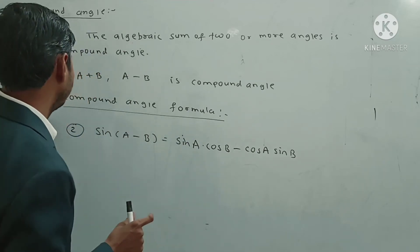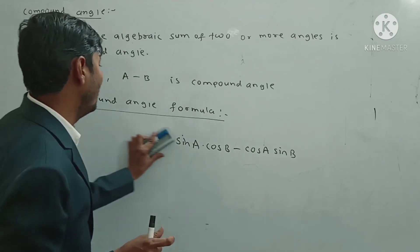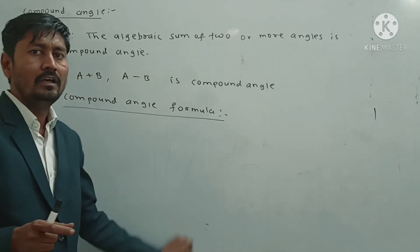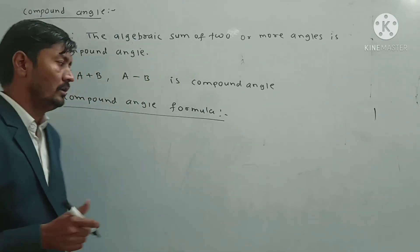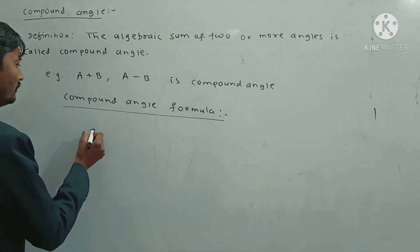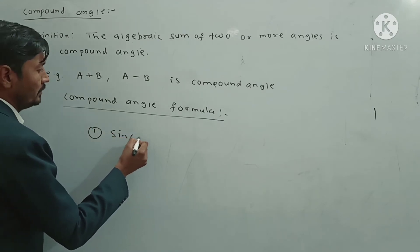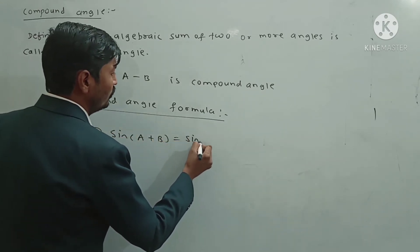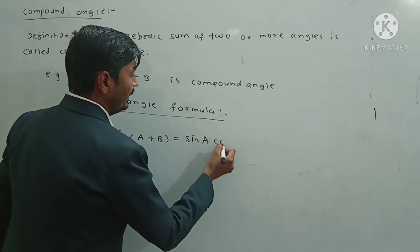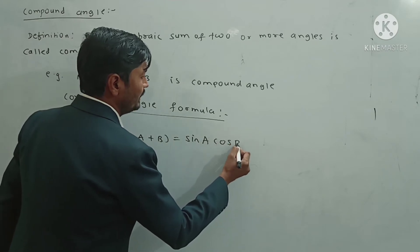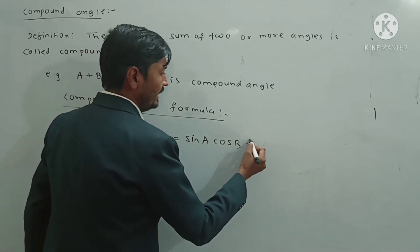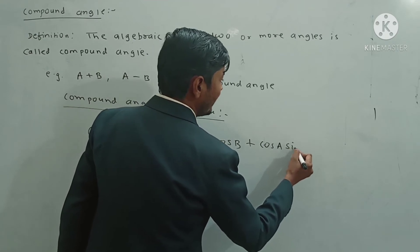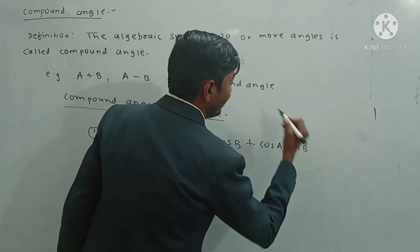Now let us write all four formulas one by one. The first formula: sin(A+B) is equal to sin A cos B plus cos A sin B. The second formula: sin(A-B) is equal to sin A cos B minus cos A sin B.